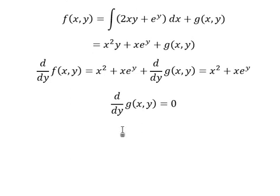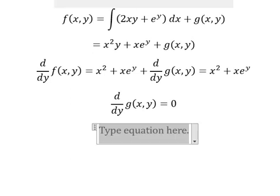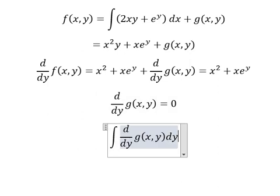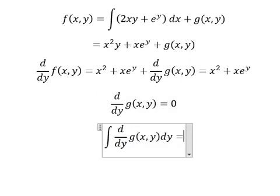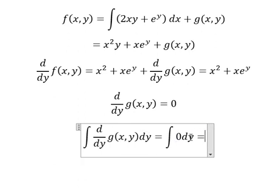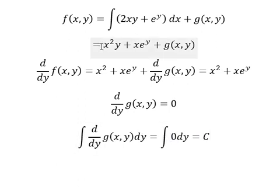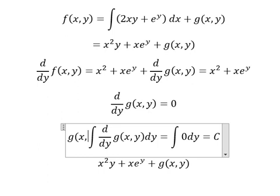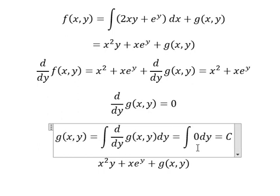So I will take the integration for both sides and you get C. So we return back to this one. The integral gives us x squared y plus xe to the y equals to C.